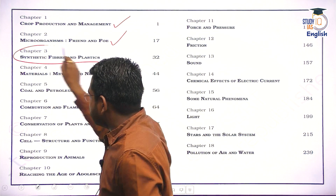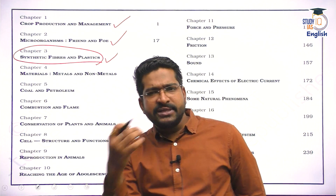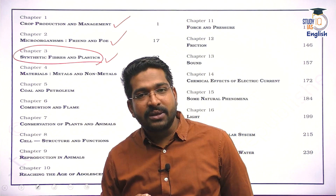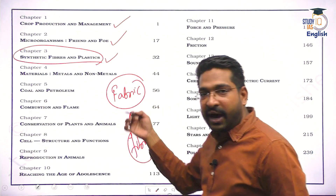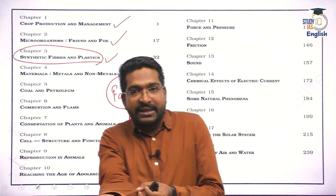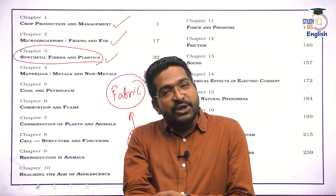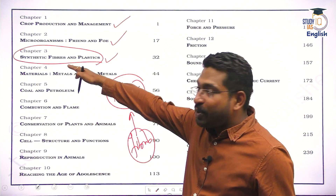If you recall from our interaction in NCRT 6 and NCRT 7, we discussed the chapter 'Fibers to Fabrics,' where we spoke about how to create a fabric. I need basic fibers — from fibers I create a yarn, and from that yarn I eventually create a shirt. These fibers can be natural fibers or artificial fibers. That understanding we have already developed, and today we will talk about these artificial synthetic fibers and plastics.